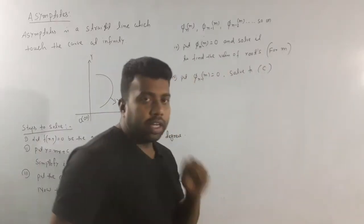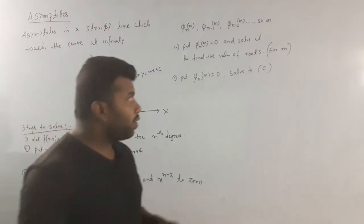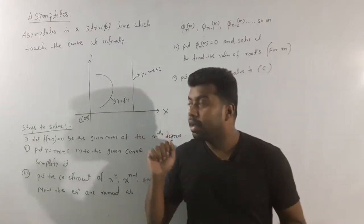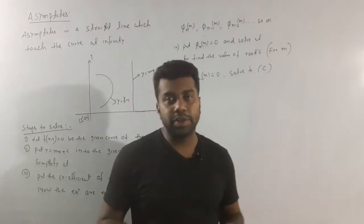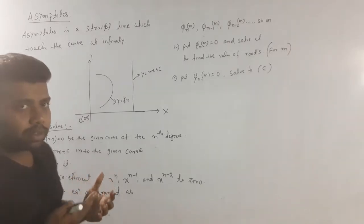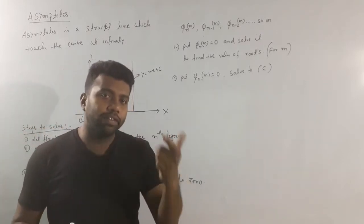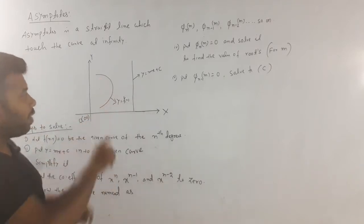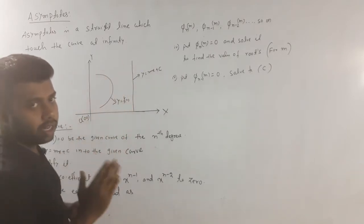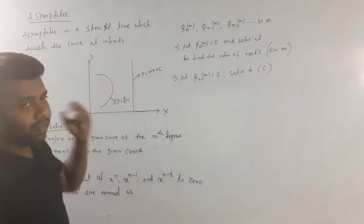Good evening students. Today we have a topic of asymptote. So what is asymptote? Asymptote is a straight line which touches the curve at infinity. That means, if we have a curve, then we have a f of x, then asymptote is a straight line which touches the curve at infinity — infinity means not defined.